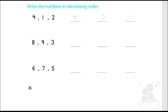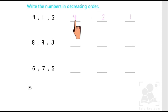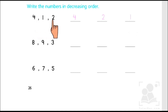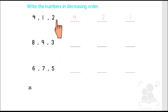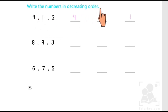Let's move on to the next part of the exercise, which is about decreasing order. Decreasing order means we have to start from the greatest number, ending with the smallest. The first example has been done for us with numbers 4, 1, 2 — 4 is the greatest, then 2, and 1 is the smallest. This is how we logically put numbers in decreasing order.